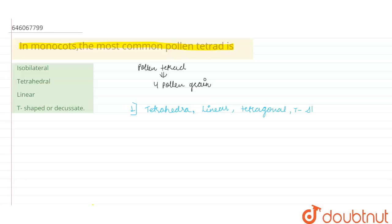T-shaped, and so on — there are many more categories. Now let's discuss our options. The first option is isobilateral. In this arrangement, pollen grains are arranged in two different planes, and they are known as an isobilateral tetrad. This would be the correct option because it is mostly seen in monocots.